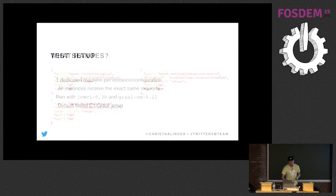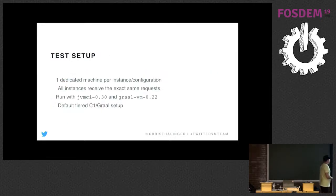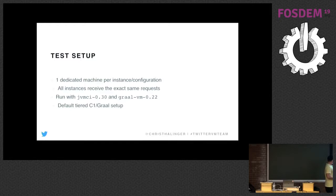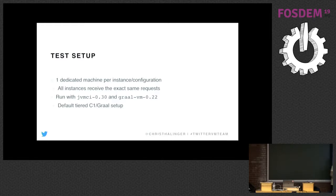The test setup uses dedicated machines with nothing else running, because crosstalk is a big issue in performance evaluations. All instances receive the exact same requests — not just the same number, but the exact same requests, because a tweet could be one character or 280 characters long, which would affect memory allocation. We're running this version of Graal with the default tiered setup of C1 and Graal.